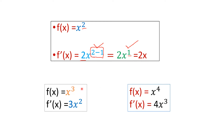Let us take some other examples. If the function is x power 3, applying the power rule, 3 comes to the beginning and the new power is 3 minus 1, giving 3x power 2. For x power 4, the derivative is 4x power 3.